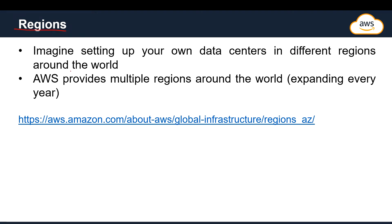Now let's talk about what regions are in AWS. Imagine setting up your own data centers in different regions around the world — would that be possible for a startup just getting started? Building your own data centers in other parts of the world is highly difficult. To tackle that, AWS has come up with multiple regions around the world, and they keep expanding every year. For example, AWS recently launched a new region in Hyderabad, India. These regions help us deploy our applications and resources, keeping them highly available.